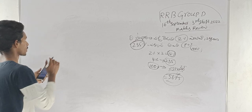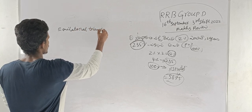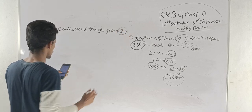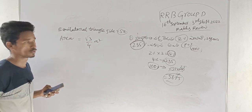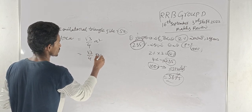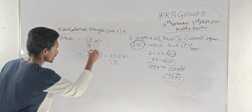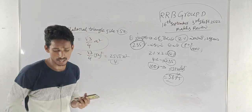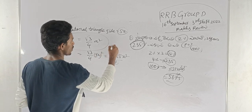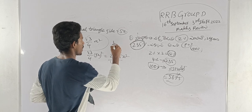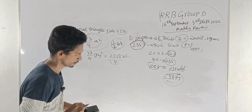Next: equilateral triangle problem. The side of the equilateral triangle is given as 5x. We need to find the area. The area of an equilateral triangle formula is root 3 by 4 into a squared. So root 3 by 4 into (5x)² = 25√3 x² / 4. That is the area of the equilateral triangle using the formula root 3 by 4 into a squared.